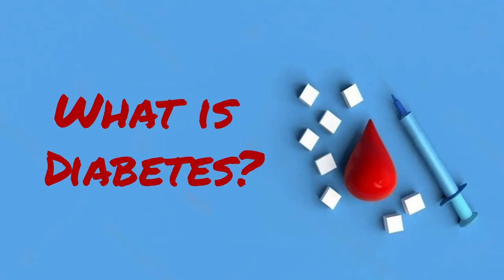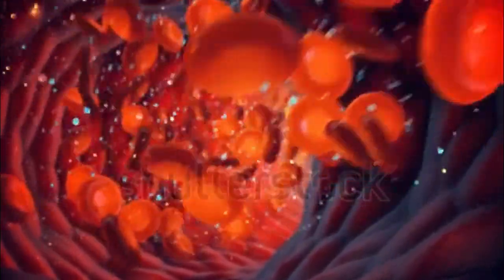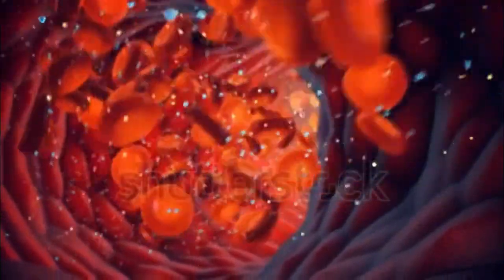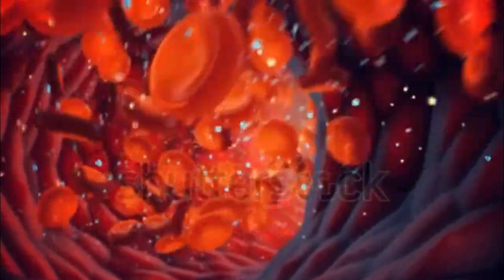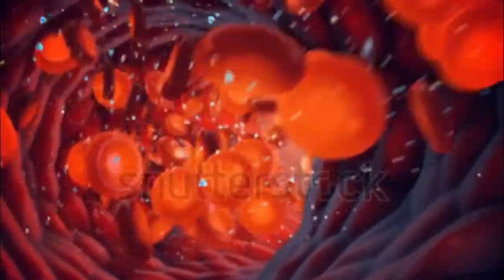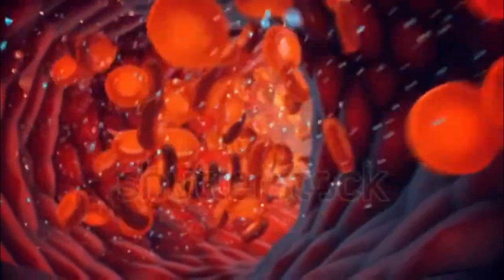What is diabetes? Diabetes is a disease that occurs when your blood glucose, also called blood sugar, is too high. Blood glucose is your main source of energy and comes from the food you eat. Insulin, a hormone made by the pancreas, helps glucose from food get into your cells to be used for energy.